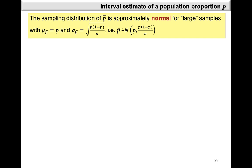In chapter 7 we saw that the sampling distribution of P-bar is approximately normal for large samples. In this case, large samples means that n times P is at least 5 and n times 1 minus P is also at least 5. In that case, P-bar has an approximate normal distribution with a mean of P, which is the population proportion, and a variance of P times 1 minus P over n.